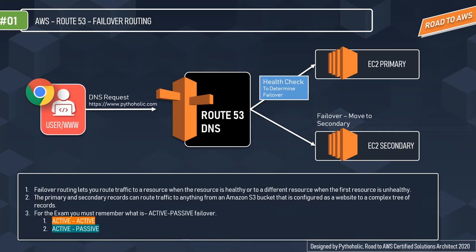Active-passive configuration is used when you want a primary resource or group of resources to be available most of the time, and a secondary resource or group of resources to be on standby in case all primary resources become unavailable. Route 53 includes only healthy primary resources in responses, and if all primary resources are unhealthy, it begins including healthy secondary resources in DNS query responses.